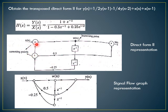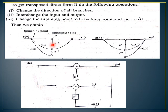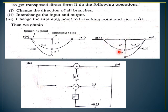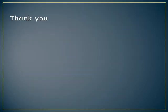The basic concept is: interchange the input and output, change the direction of all the branches, and change summing points to branch points and branch points to summing points. After taking the direct form 2 of the transfer function and getting the signal flow graph, to get the transpose direct form 2 look at the direct form 2 representation wherein the summing points have been changed to nodes and branch points changed to summing points. Interchange input and output, change direction of branches, and shift the zeros and poles: in direct form 2 we had poles then zeros; now we make it zeros then poles. Adders become nodes and nodes become adders accordingly. Thank you.